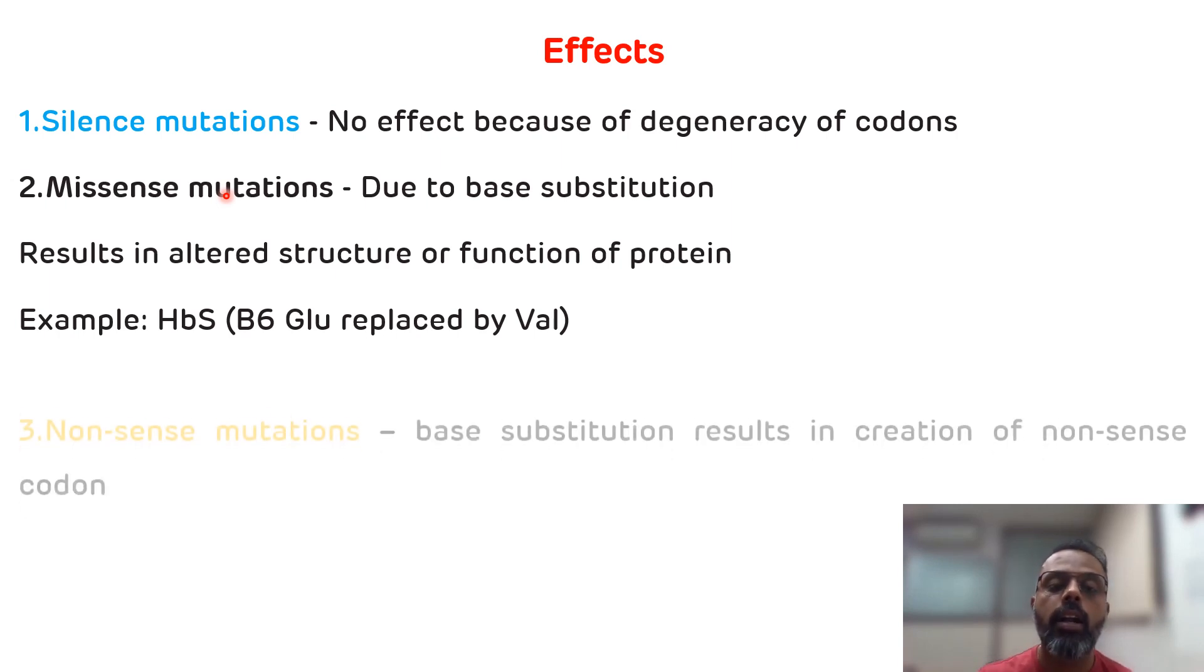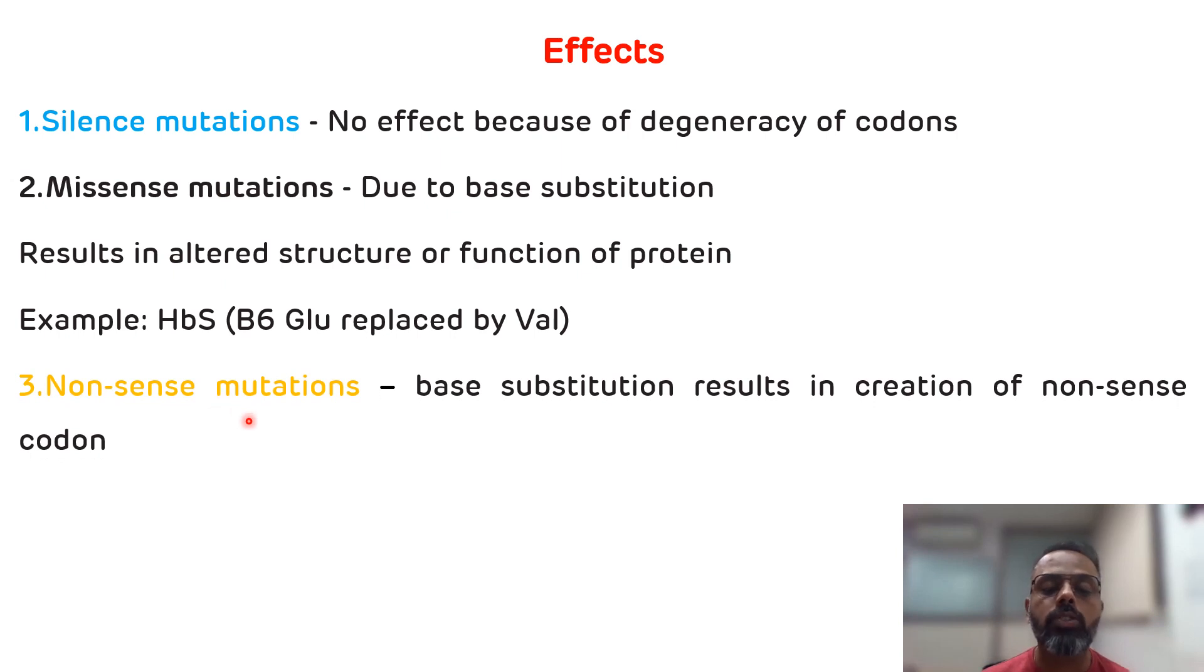And the third effect is the nonsense mutation where base substitution will result in the creation of nonsense codon. And the nonsense codons are the termination codons. That is UAA, UAG and UGA which result in stoppage of polypeptide chain synthesis.